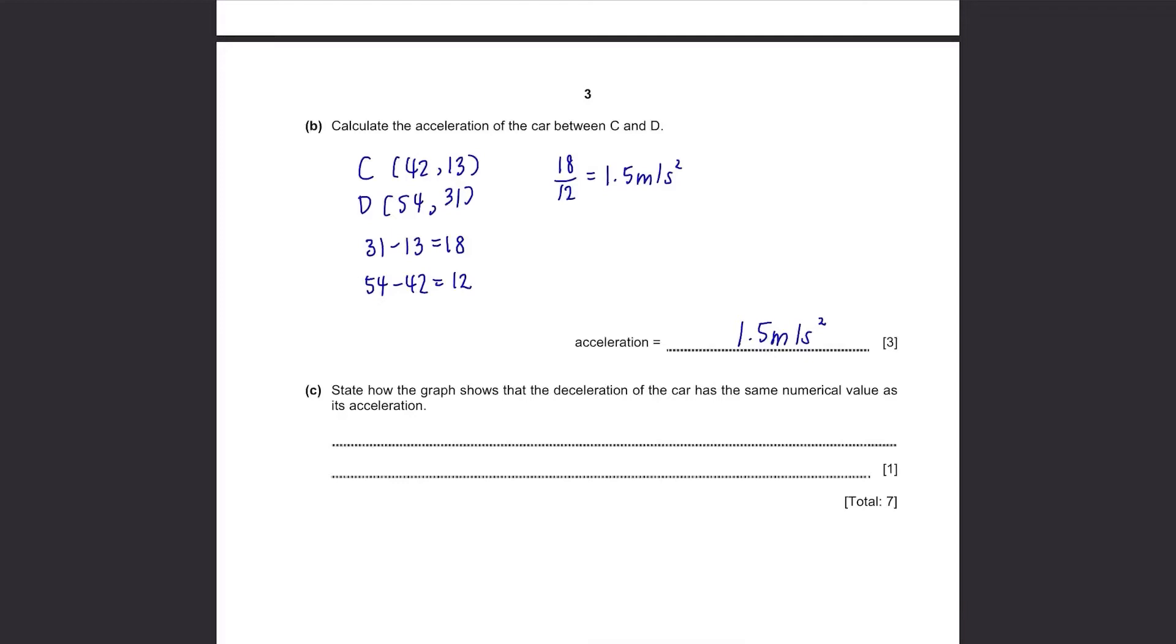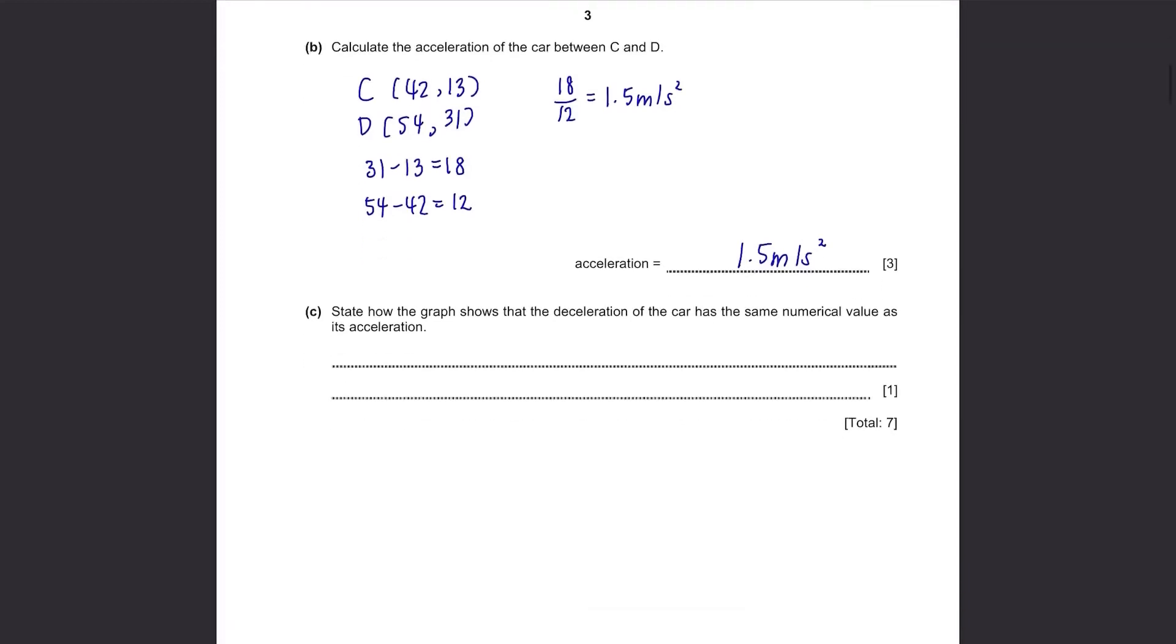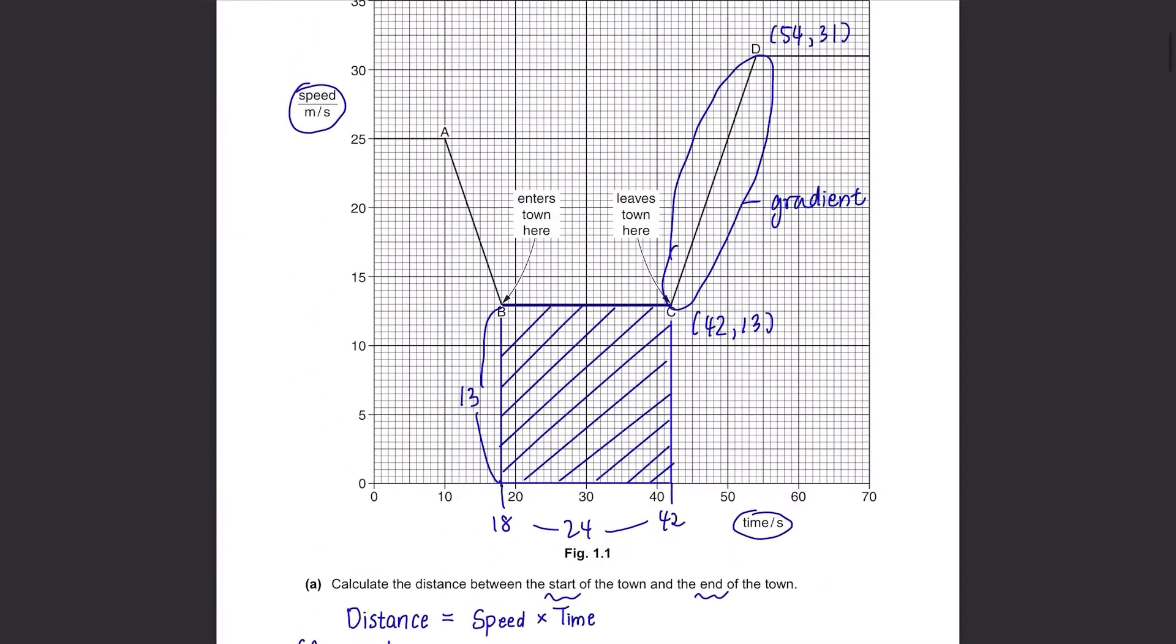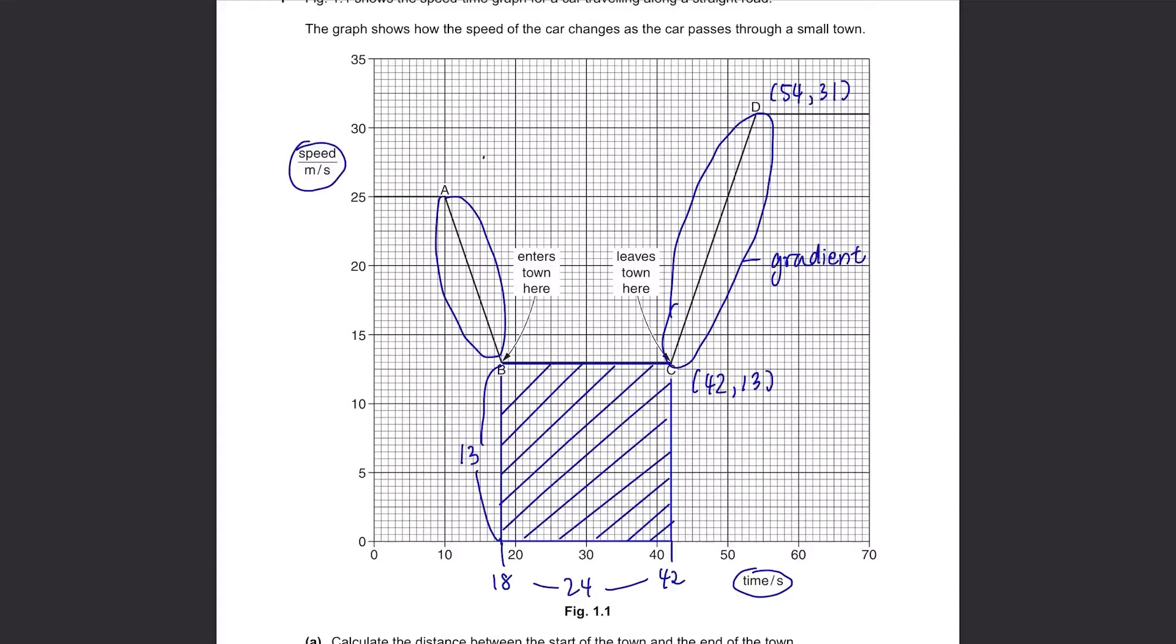Part C. State how the graph shows that the deceleration of the car has the same numerical value as its acceleration. Back to our graph, this part represents the deceleration and this part represents the acceleration. The question said they have the same numerical value and yes, it seems like it because we can see that both of them have same gradient, which means there were equal speed changes in equal times.